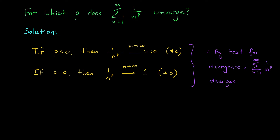This just leaves us with the positive values of p. Which positive real numbers can we put here to get a convergent series? We already know one example: if we set p equals 2 we get the series from our overview video, which we saw was convergent using the integral test. I wonder if the integral test will work for other values of p — let's give it a try.